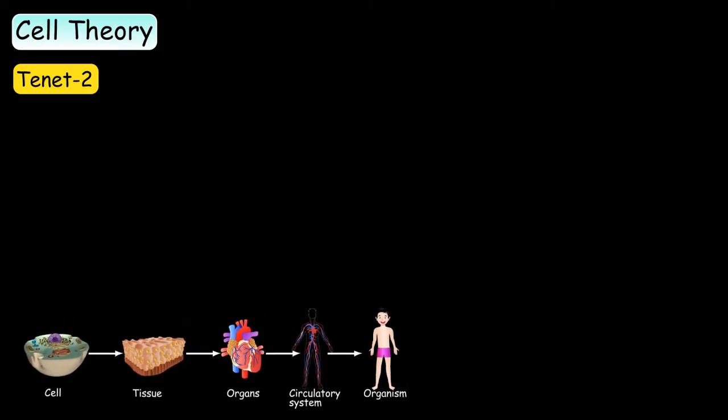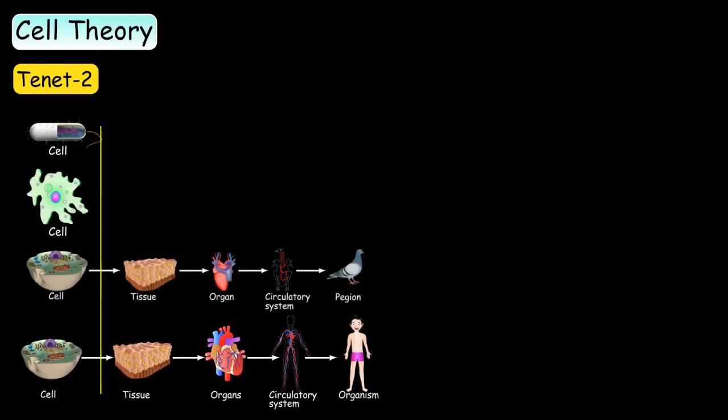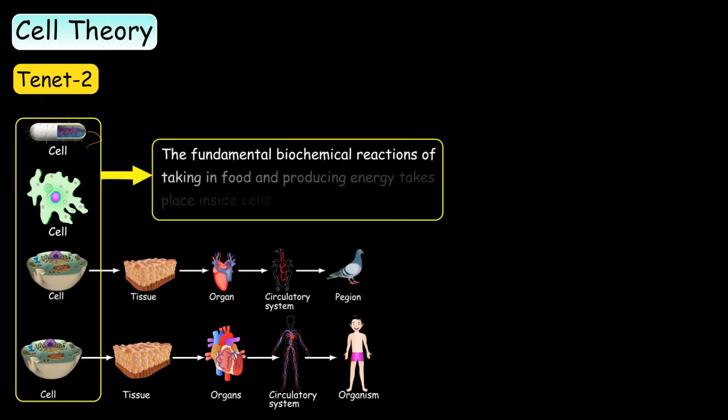So, no matter how complex an organism is, the fundamental biochemical reactions of taking in food and producing energy takes place inside the cell, which is why cells are the basic fundamental unit of living organisms. So, this was the second tenet of cell theory.